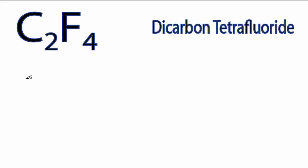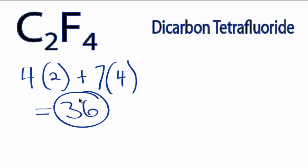This is the Lewis structure for C2F4. We'll look on the periodic table. Carbon has 4 valence electrons. It's in group 4 or 14, but we have 2 carbons. And then fluorine in group 7 or 17 has 7 valence electrons, but we have 4 of those. So 8 plus 28 equals 36 total valence electrons.